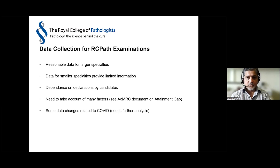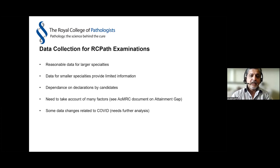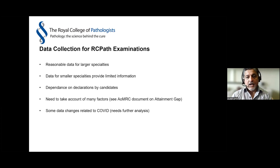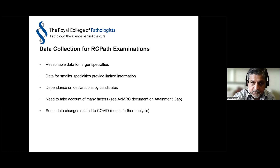There is an AOMRC document on the attainment gap which is certainly worth looking at - I'm not sure whether it's been released or is about to be released. There may also be room to look at data changes related to COVID, which comes up in our exams committee meetings when we try to figure out why some pass rates differ significantly from previous years.